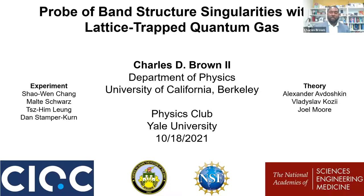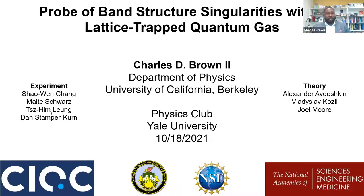Today I'm going to tell you about recent work done in the optical lattice subgroup in the Stamper-Kurn lab at Berkeley, where I've been looking at a probe of band structure singularities using a lattice-trapped quantum gas. I want to acknowledge sources of funding and my experimental and theoretical colleagues — in particular, awesome grad students Xiaowen Chong and Malta Sports, my postdoc advisor Dan Stamper-Kurn, theory collaborators including a postdoc soon taking a faculty job, and Joel Moore.